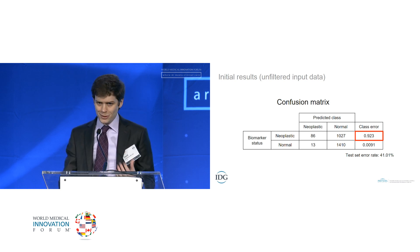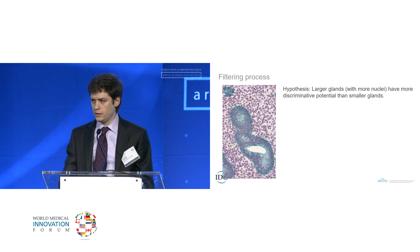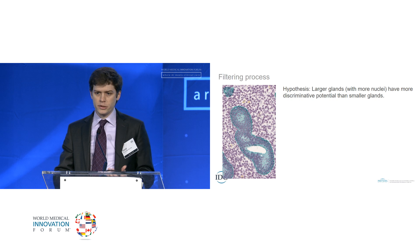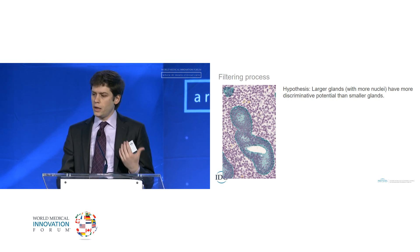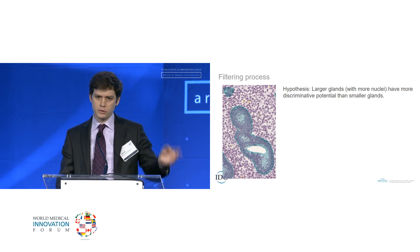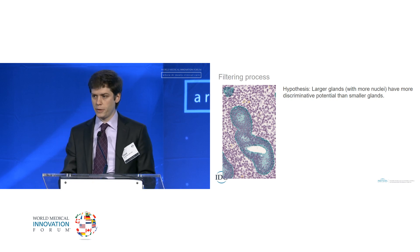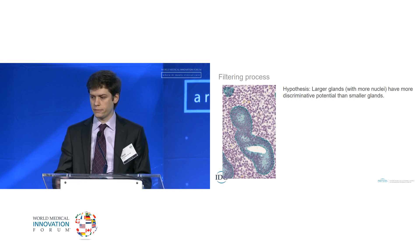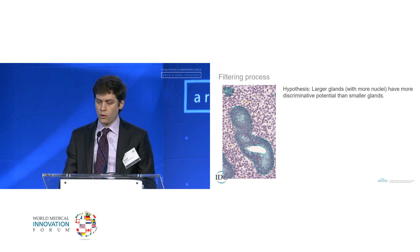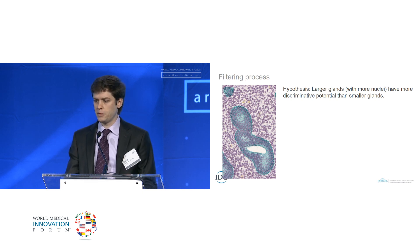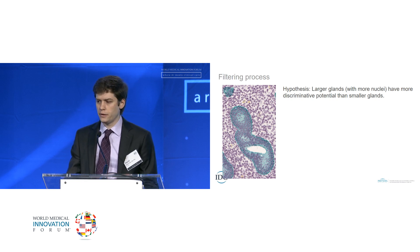This initial result may sound discouraging, but as pathologists we have insight into the histology of these glands. We thought a priori that some glands were more likely to be informative than others. In particular, large glands that inherently have more architectural information are likely to be more discriminatory than smaller glands. So we decided to filter out small glands, which we thought could be adding noise to the data, and only classify larger glands.